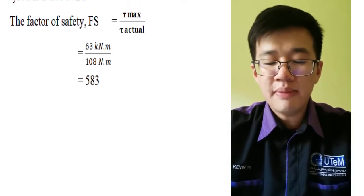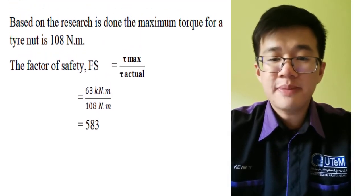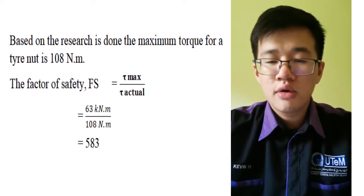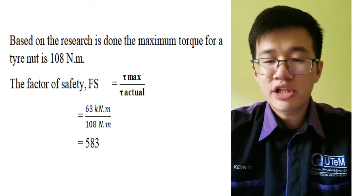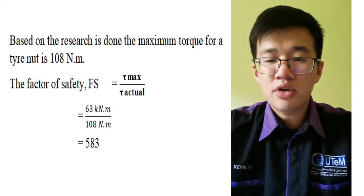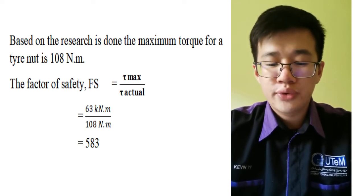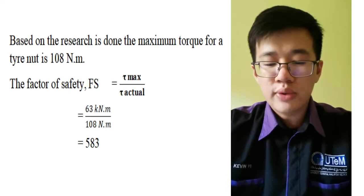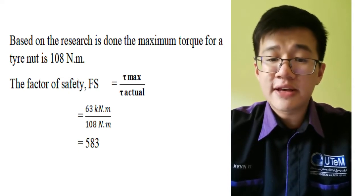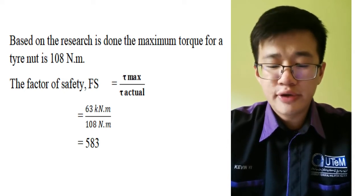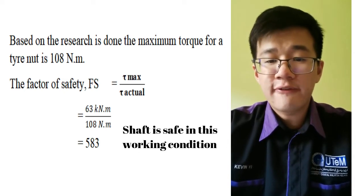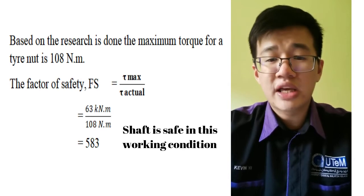Now we will discuss about the factor of safety, FS. FS is equal to tau max over tau actual. Tau max is the maximum torque which the shaft will accept. And the tau actual is the maximum torque working torque. So we have the factor of safety that is 583 which means the shaft is very safe at this working condition. That's all from me. Thank you.